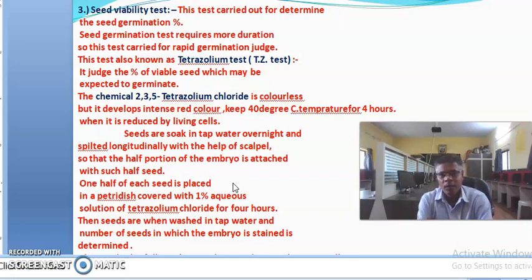Initially we see the seed viability test. The seed viability test is carried out to determine or detect the germination percentage of that seed. This test requires small time or duration for the test, whereas the germination test requires 7 to 28 days and it is a longer process.